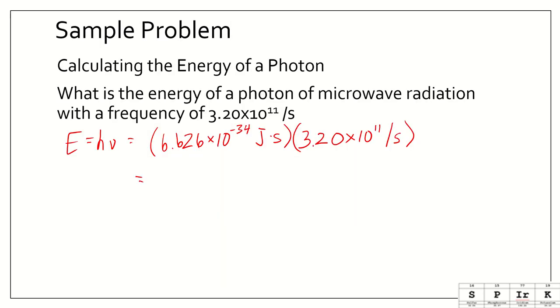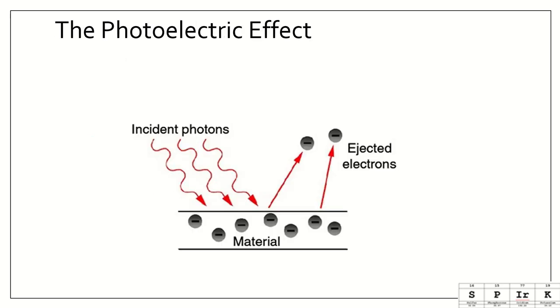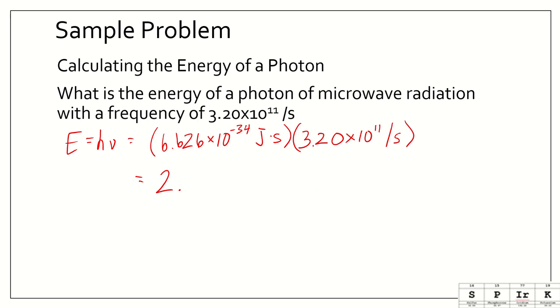As we type that into our calculator, let's look at what our units are going to be. We're multiplying joule times seconds by per seconds. So, we're going to get joule times seconds on top divided by seconds. The seconds are going to cancel, and we are left with joules. And that should be correct, because we know that we want to calculate energy in joules. When we plug this into our calculator, we should get energy equal to 2.12 times 10 to the negative 22nd joules.